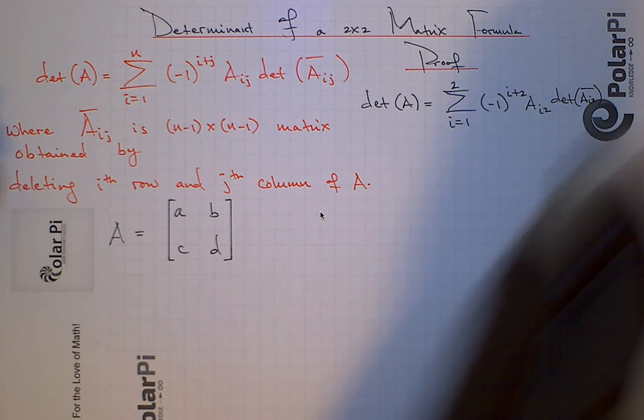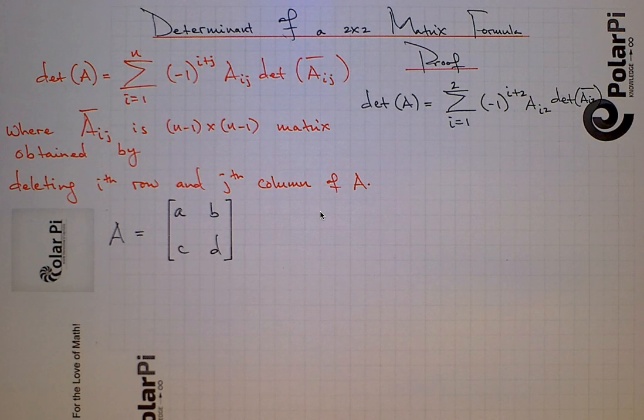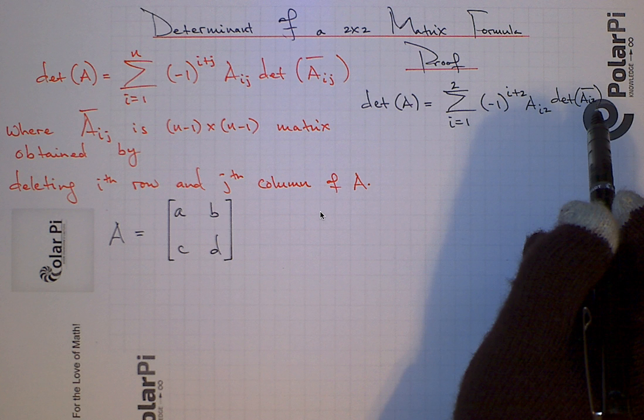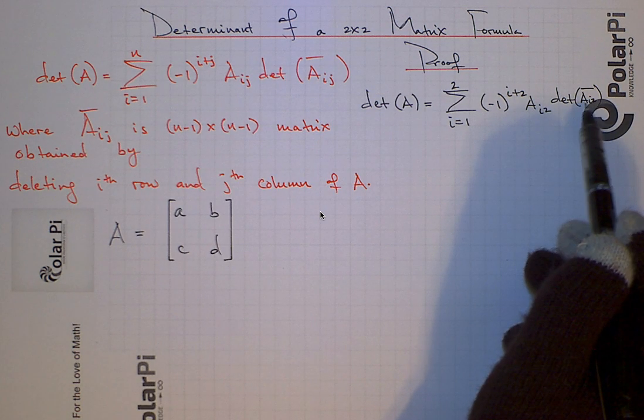And it's negative 1 to the I plus 2 and then times AI2 and then times the determinant of AI2 bar. That's AI2 bar, even though it's kind of sitting on top of that darker background, there's an I2 right there, AI2 bar.